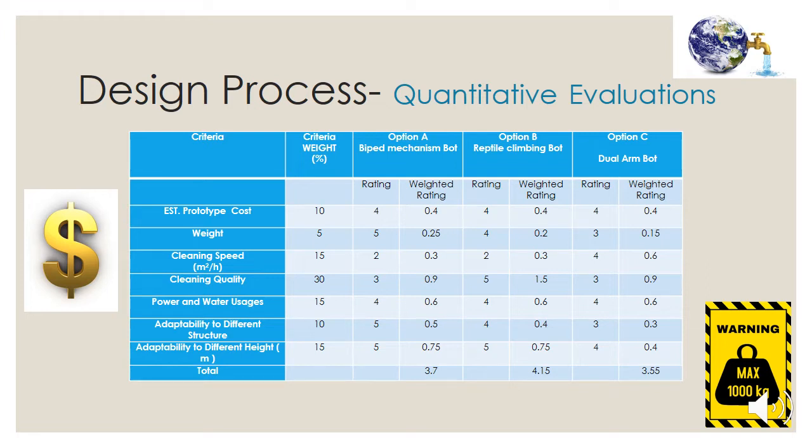Option A excelled in the weight category with a lowest weight of 2.96 kg and in adapting to different structures with the expandable robotic arm. Option B had the most effective cleaning mechanism with the brush and the squeegee system, making it very favorable. Option C stood out with its exceptional cleaning speed of 0.33 meters squared per second. Taking into consideration all of the criteria and summing them, Design B surpassed the other two options, making it the design that we modified and perfected.